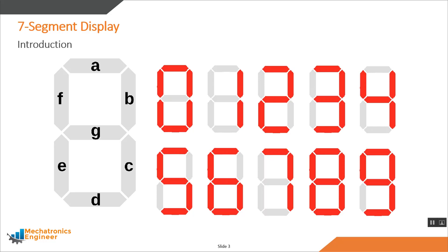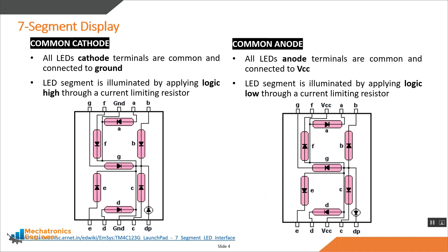This way we can display any number from zero to nine. Some seven segment displays also have an extra LED to show the decimal point. An LED is a light emitting diode with two pins: cathode and anode. Depending on which LED pins are connected together, we have two types of seven segment displays. In common cathode type, all cathode terminals of the LED segments are joined together and connected to logic low or ground.